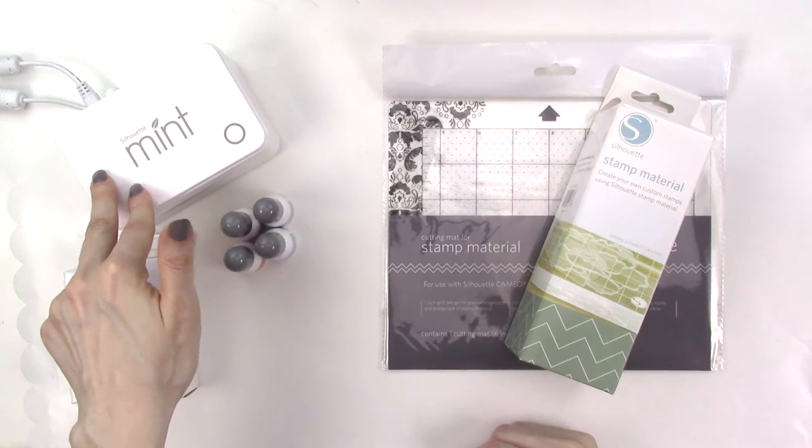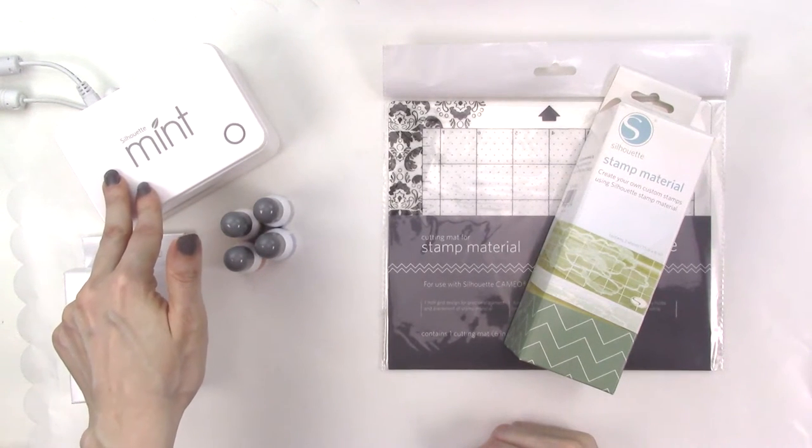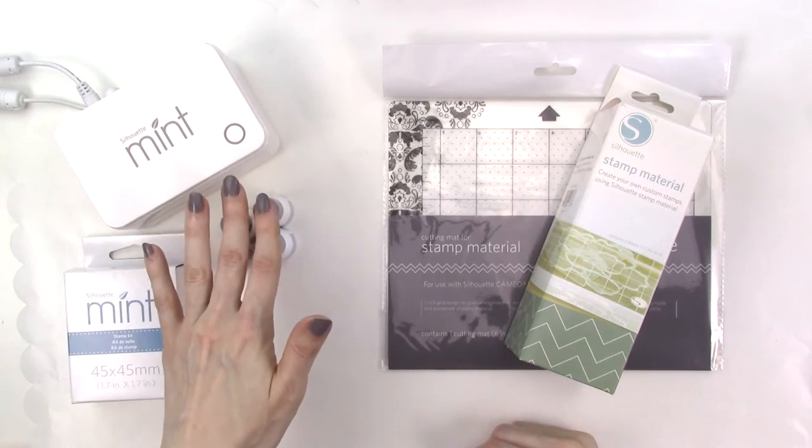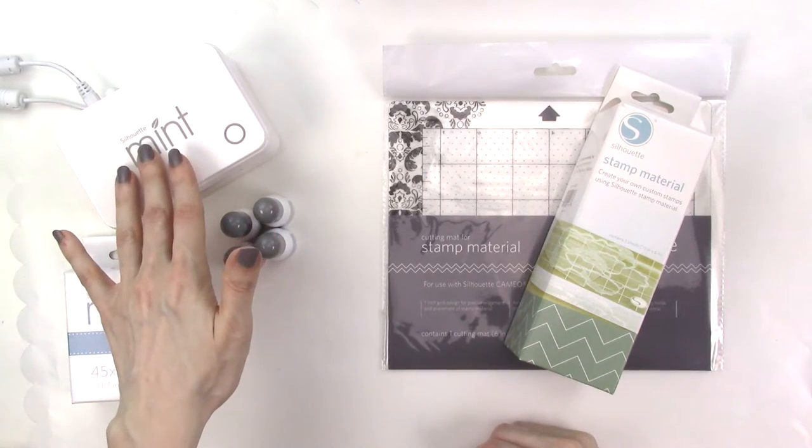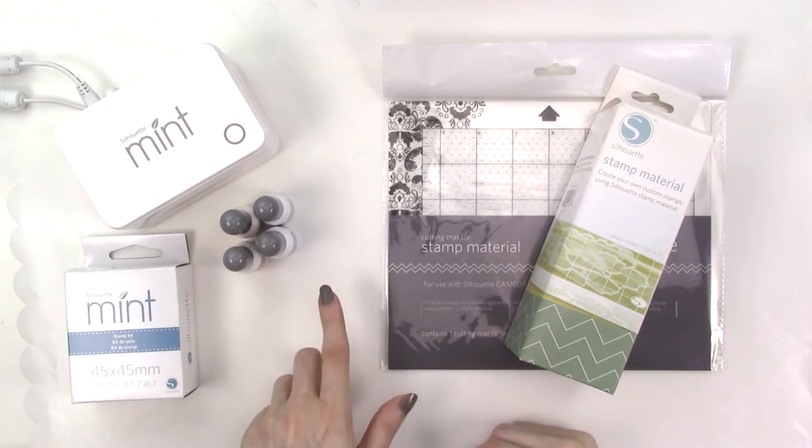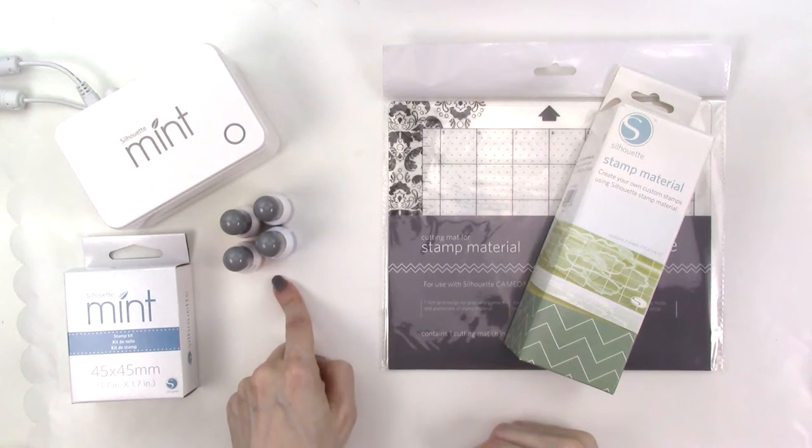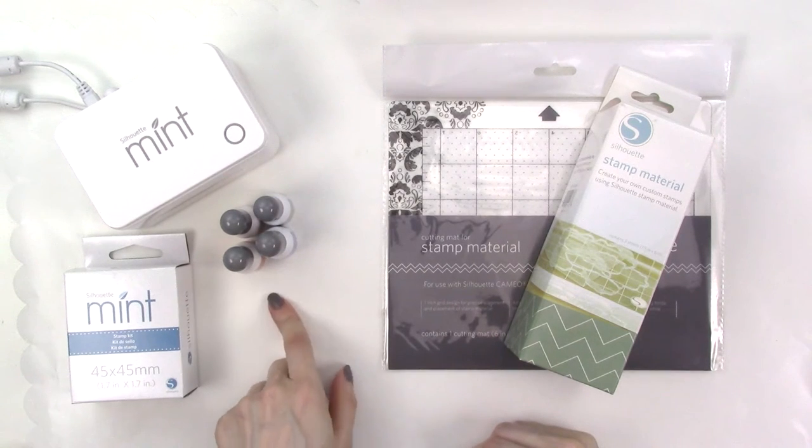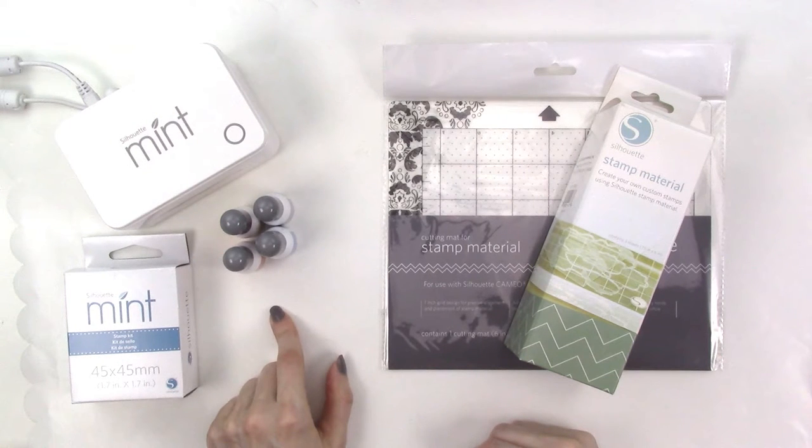As of the time that I recorded this video you can purchase a Silhouette Mint starter kit on Amazon.com for about $73. The starter kit includes the stamp machine and black, red, blue and yellow inks plus two different size stamp sheets, stamp mounts and stamp blocks and all of the wires and plugs that you'll need for the machine. It also includes a disc with Mint Design Studio which you'll need to install to design and make stamps with the Mint.